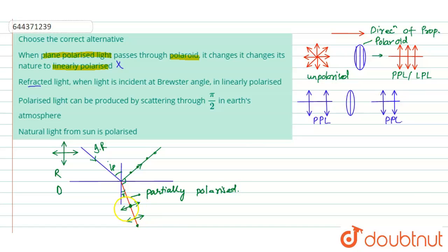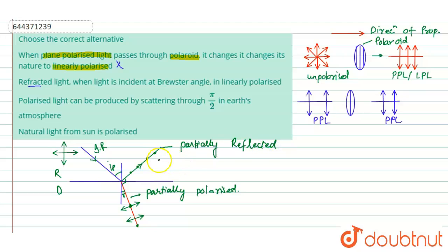The refracted light is partially polarized because it contains electric vectors in more than one direction. Now, if the incident ray is incident at the polarizing angle (Brewster's angle), the partially reflected ray is completely polarized — it contains electric vectors in only a single direction. However, the refracted light remains only partially polarized, not completely polarized.